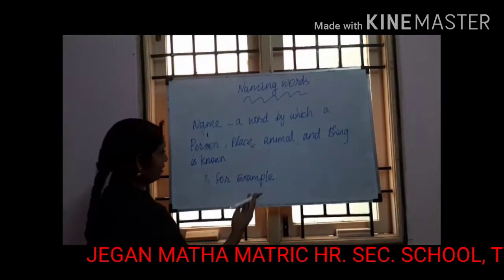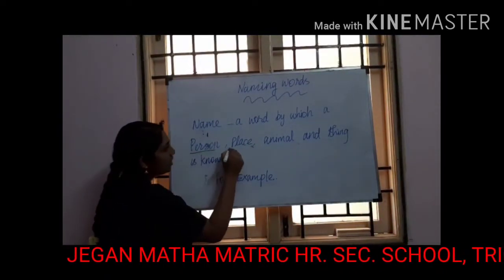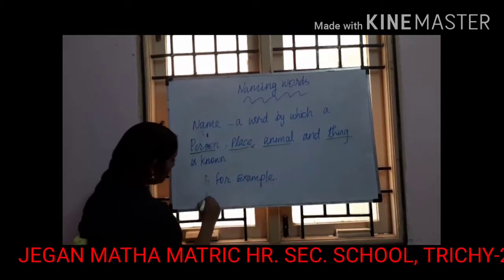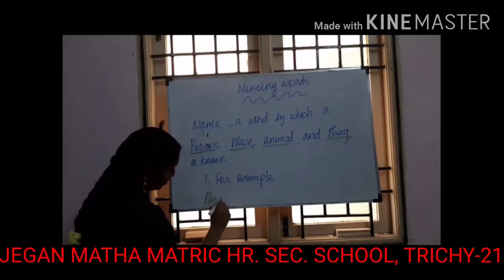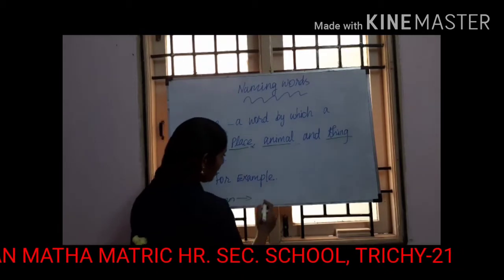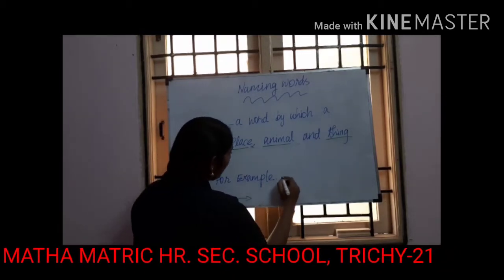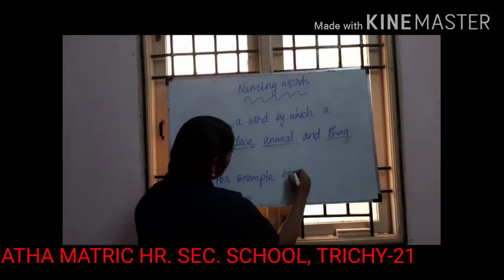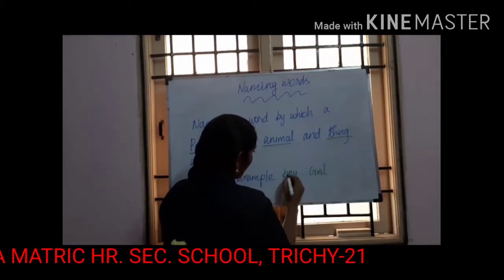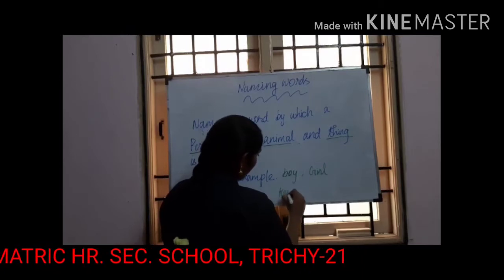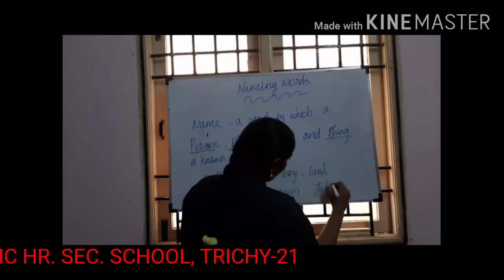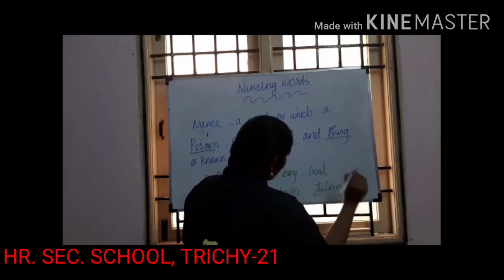For example: person, place, animals, and things. For the first category — person — here are a boy and a girl. The boy's name is Kevin. The girl's name is Juliana.